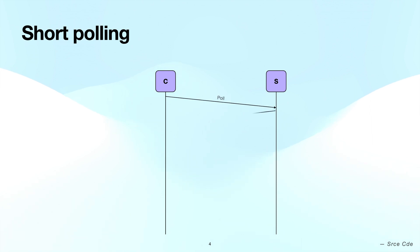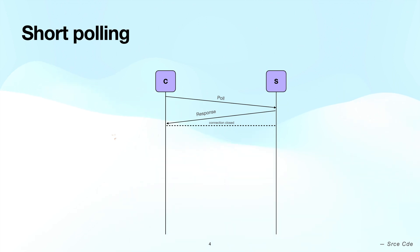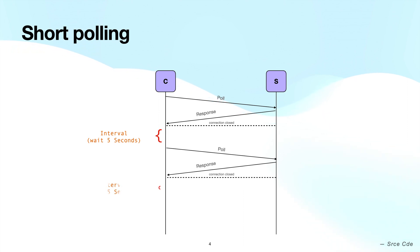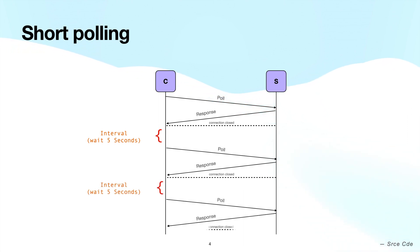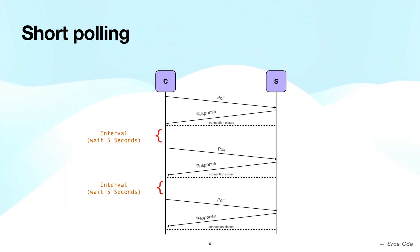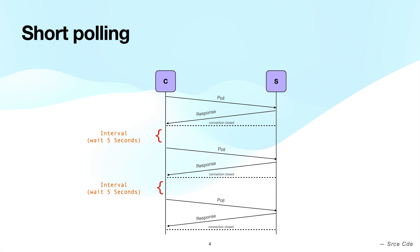In action, it looks something like this. We have a client and a server. The client makes a request to the server for new data, the server sends the response immediately with whatever data it has, and the connection is closed. After the fixed interval of 5 seconds, the client makes another request. If the server has no data, it returns an empty response. Short polling can be considered stateless because each request is independent and does not rely on the previous request's response.